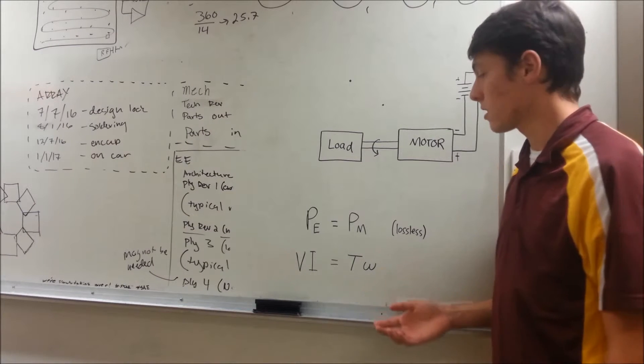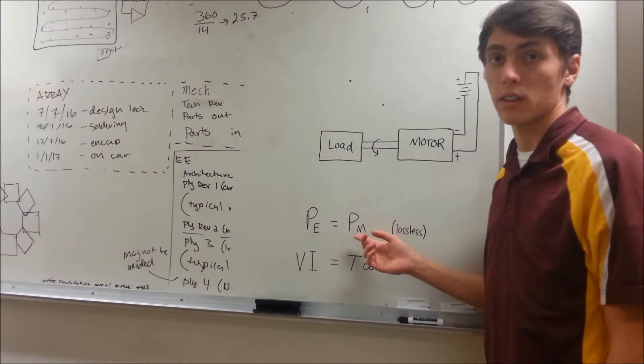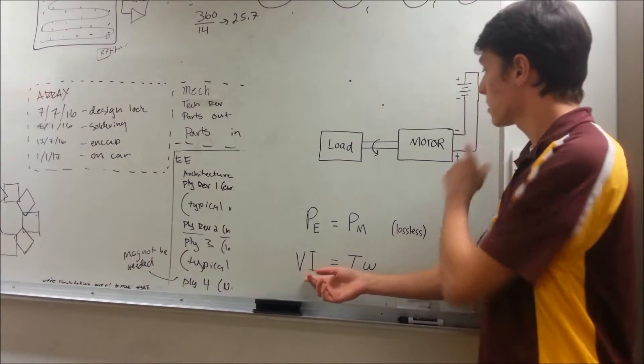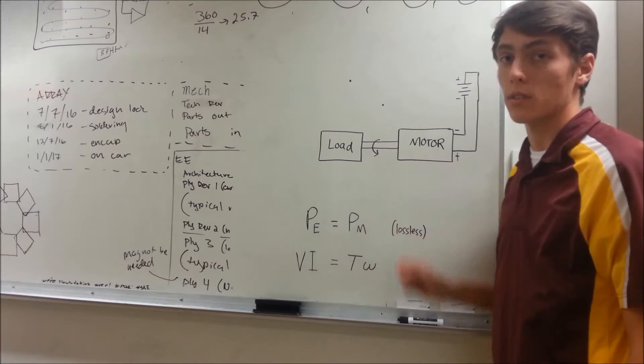Essentially, in a lossless system, the electrical power in should equal the mechanical power that you get out. Or in other words, the voltage times the current should equal the torque times the angular velocity.